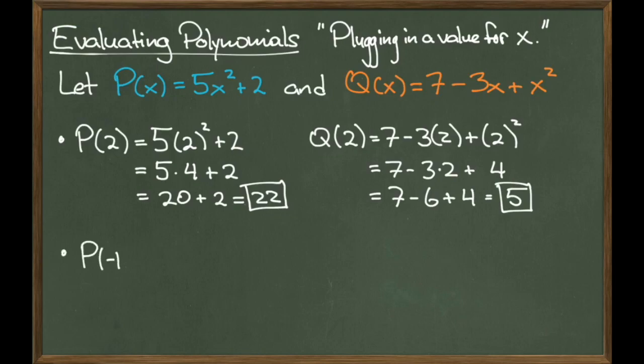To make things more interesting, let's start evaluating at negative numbers. For instance, let's compute P of negative 1. Notice that upstairs I was using a lot of parentheses. This is going to be very useful when you're dealing with negatives, because then you can keep track of signs. Plugging in gives me 5 times negative 1 squared plus 2. Following through, I get an answer of 7. It is very important to pay attention to signs here, because if you start dropping negatives, you will get incorrect answers. So use parentheses and the order of operations very carefully.